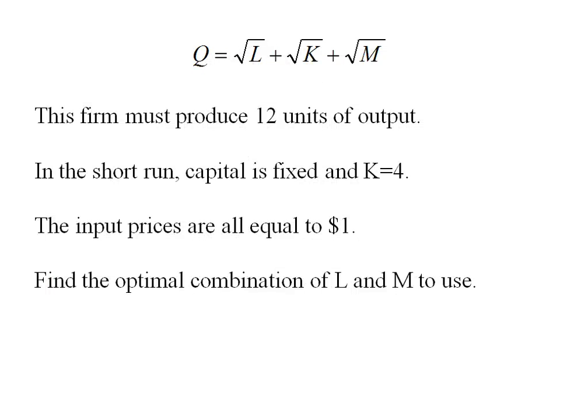This production function has labor, capital, and materials as the inputs. This firm has to produce 12 units of output and it's the short run so let's fix capital at four machines. The input prices are all equal to a dollar and our job is to find the optimal combination of labor and materials to use.